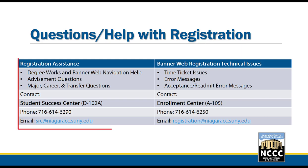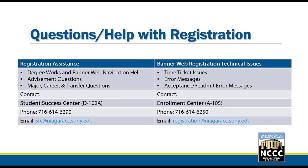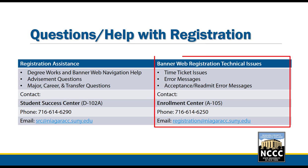If you need assistance navigating DegreeWorks or BannerWeb, or have advisement, major, career, or transfer questions, contact the Student Success Center to speak with one of the success coaches — their phone number and email are listed on screen. If you are having technical issues with registration, such as time ticket issues or error messages about acceptance or readmission, contact the Enrollment Center — their phone number and email are also listed.